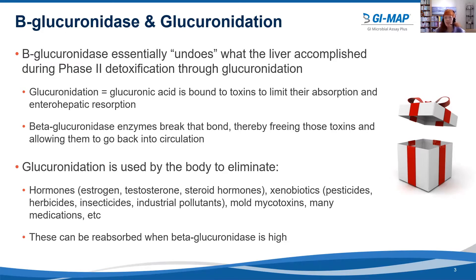Glucuronidation is used by the body to eliminate numerous substances. This includes hormones such as estrogen, testosterone, and steroid hormones; xenobiotics, which would include pesticides, herbicides, insecticides, and industrial pollutants; mold mycotoxins; and many pharmaceutical medications. So all of these can be reabsorbed when beta-glucuronidase is high.